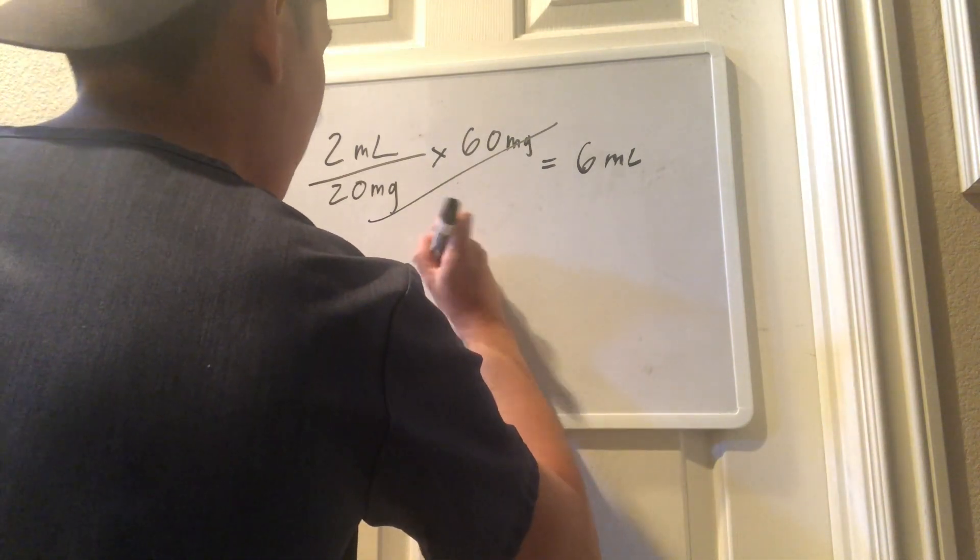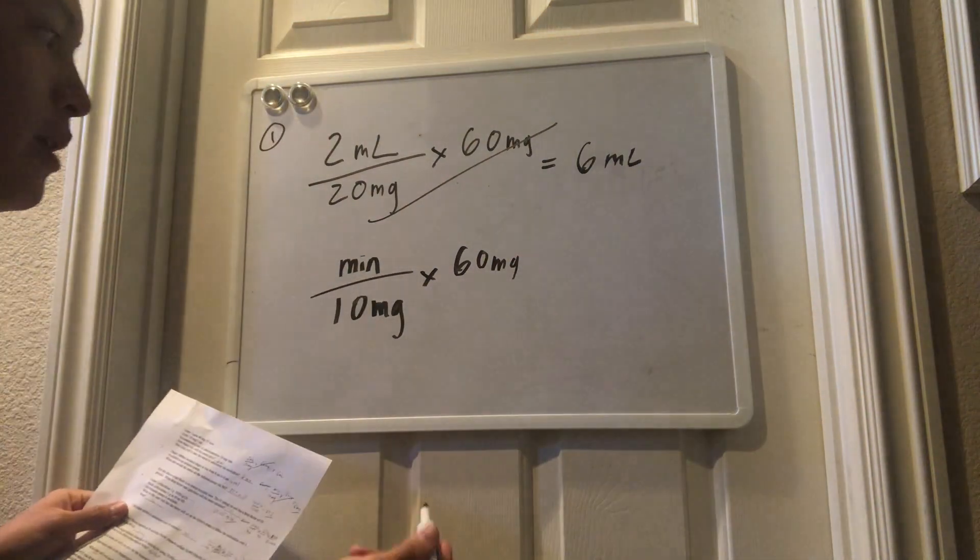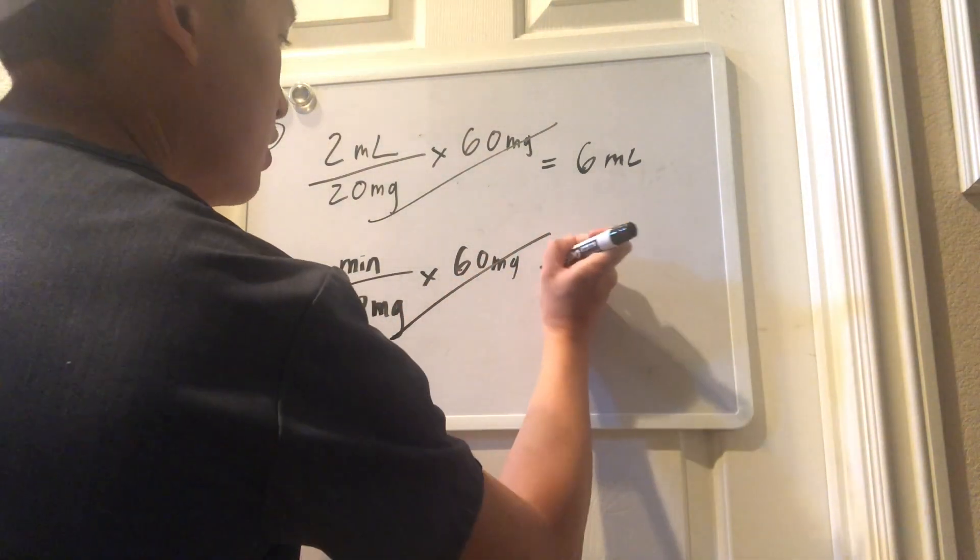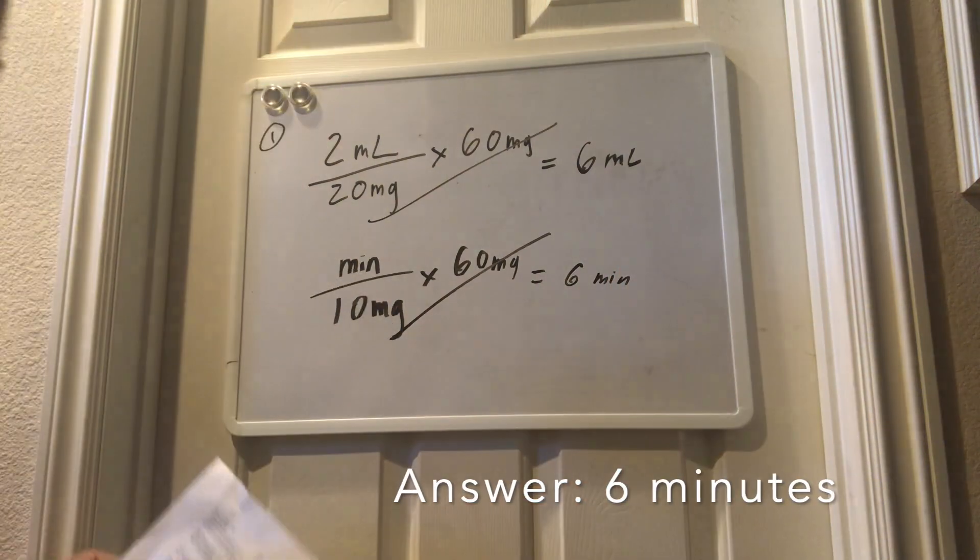We'll take the order of what we have, which is 60 milligrams of Lasix. Set it up like so. And you should be left of 6 minutes.